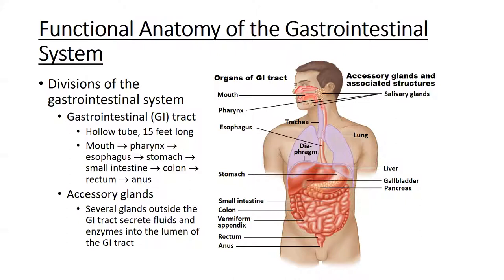Also a component of the GI system are accessory glands such as the salivary glands. The salivary glands release secretions into the oral cavity to begin breaking down and lubricating food, turning it into a substance called bolus. By the time food reaches the stomach, it's no longer recognizable food particles but a liquidy, semi-solid material. Other glands include the pancreas and the liver — the largest gland in the body — whose secretions also help in the digestive process.